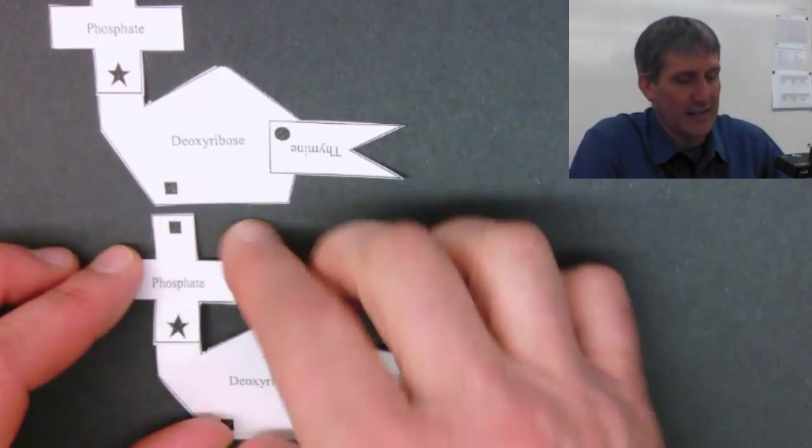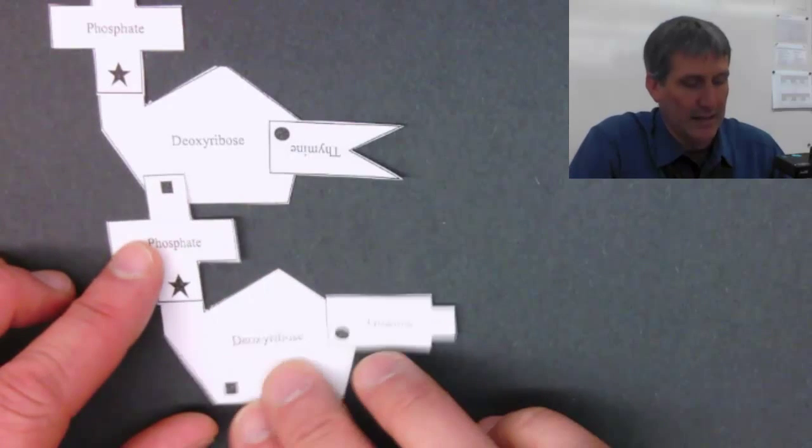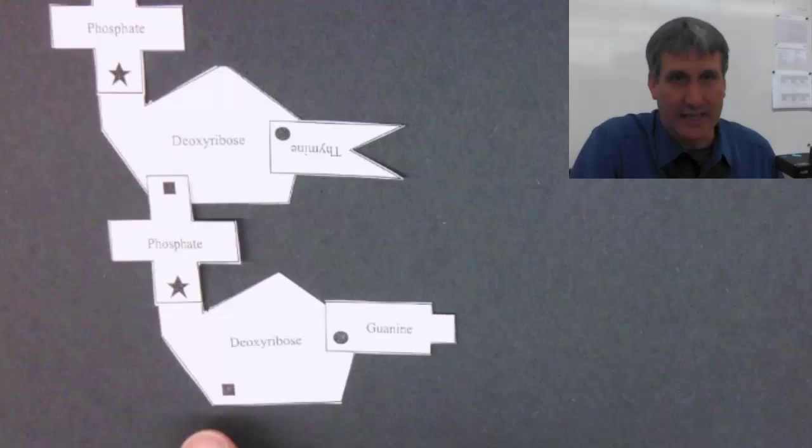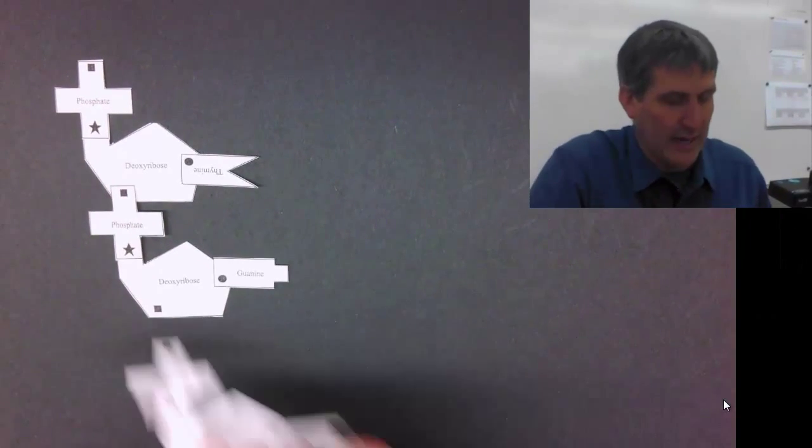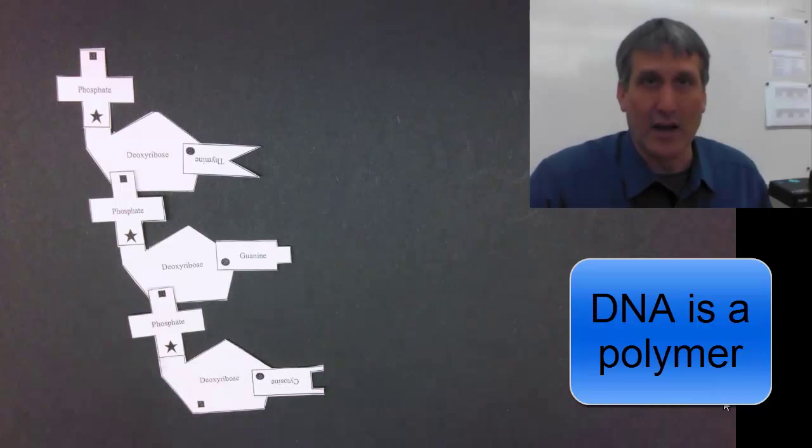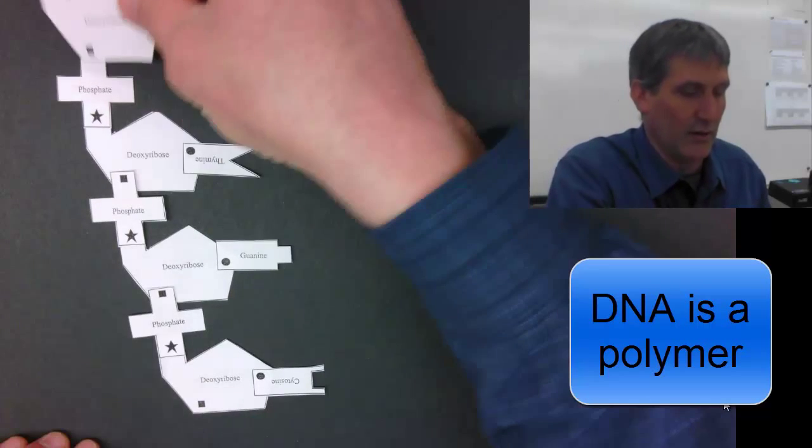That's because the phosphate covalently bonds to the deoxyribose sugar. And you'll see there's another place to bond another nucleotide, and there's another place to bond another nucleotide, and another place up here to bond a nucleotide.